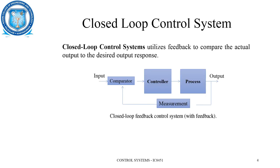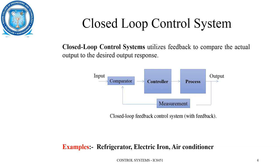Considering closed loop systems: they utilize feedback to compare the actual output — that is, the output of the process — which is fed to a comparator in order to compare the input or set value with that of the feedback element.